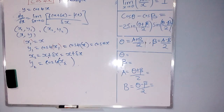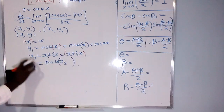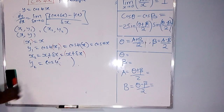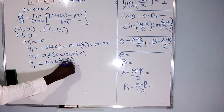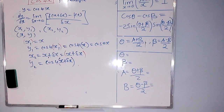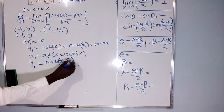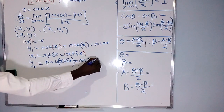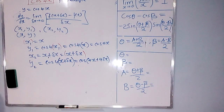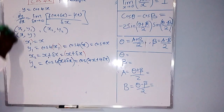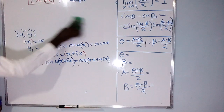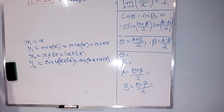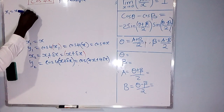So y2 = cos(4x2). You substitute the value of x2 — which is x + Δx — into that, giving y2 = cos(4(x + Δx)). Expanding the bracket, that is cos(4x + 4Δx). The gradient is change in y over change in x, which is (y2 - y1) / (x2 - x1).